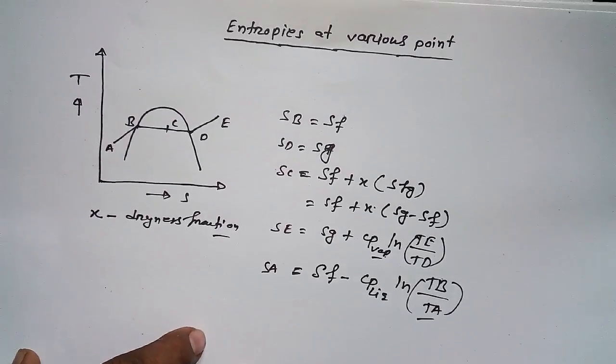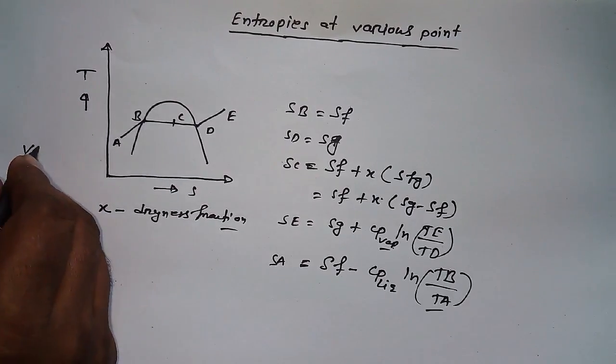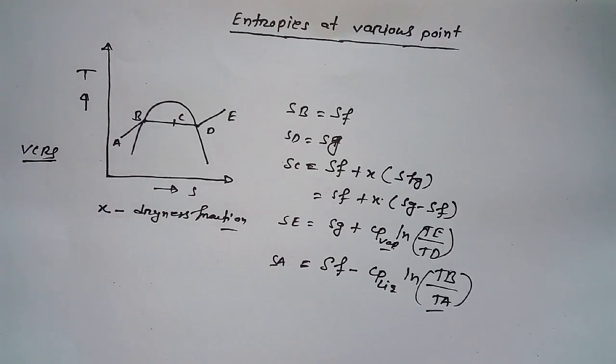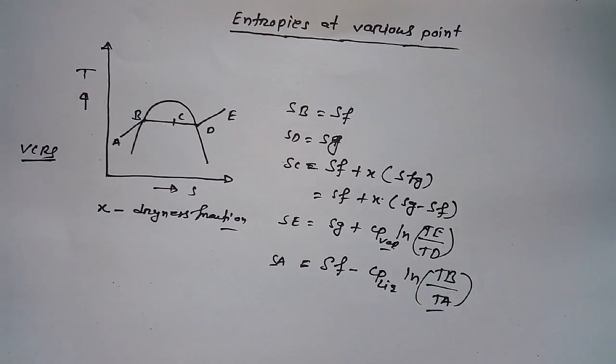So this is how you can find out entropies of various points on the VCRS cycle. This is all about VCRS cycle extension. I have already shared with you enthalpies at various points and here you are learning about entropies at various points.